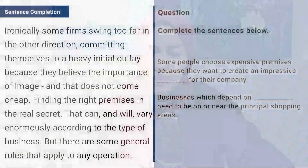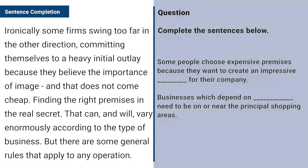The third type of question is the sentence completion question. This question is quite straightforward. You need to read the instructions carefully and understand what the question is asking. Make sure you highlight any particular keywords that stand out. Sample questions include: 'Some people choose expensive premises because they want to create an impressive blank for their company.' And: 'Businesses which depend on blank need to be on or near the principal shopping areas.'